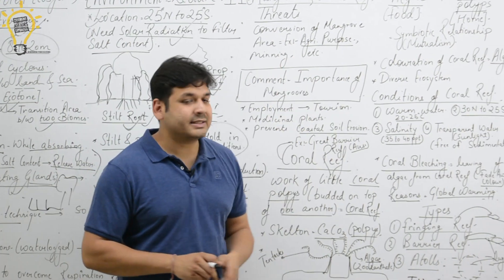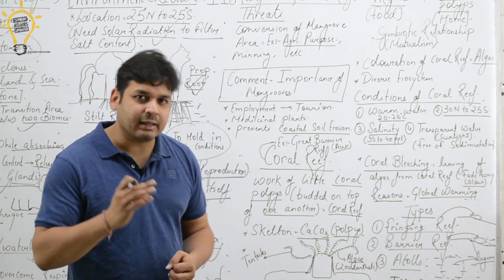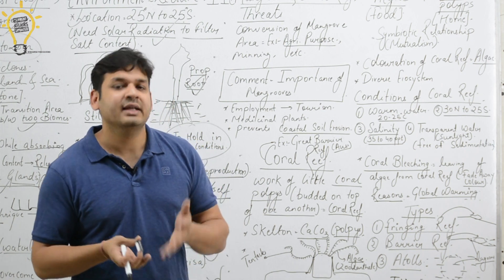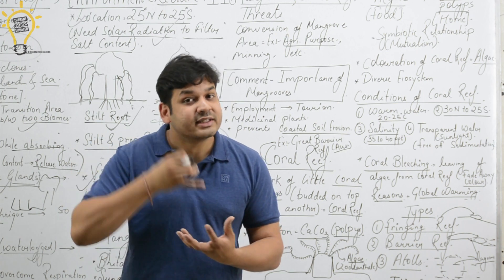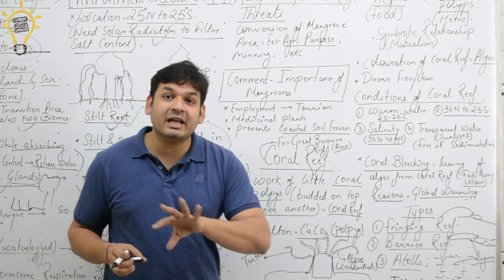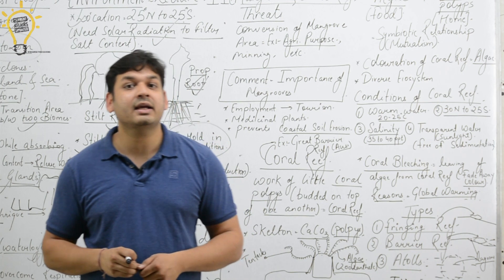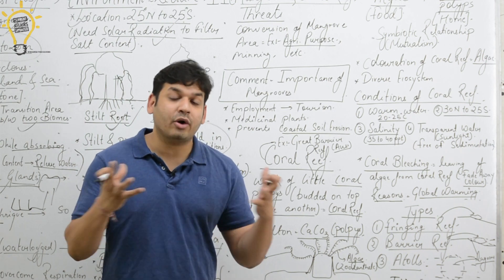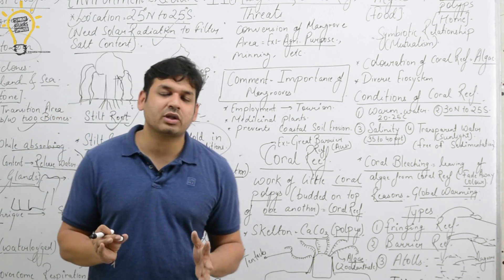The importance of mangroves is significant. They are a good source of employment because of tourism. There are medicinal plants here. They help prevent coastal soil erosion. They protect the shoreline from tsunamis and cyclones. They serve as a breeding ground for many species. Their biodiversity is very important. This covers the topic of mangroves.